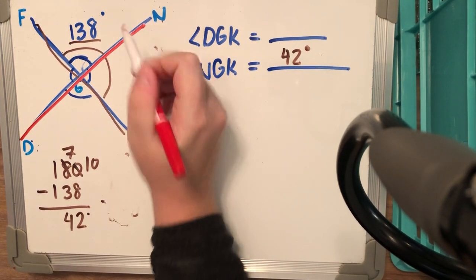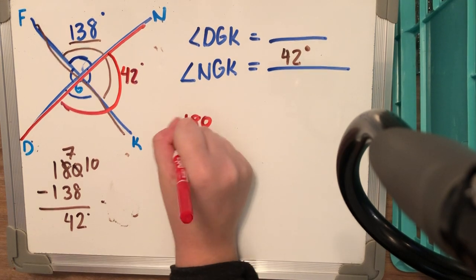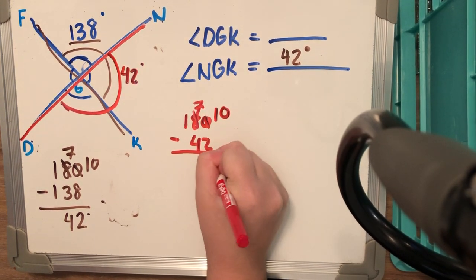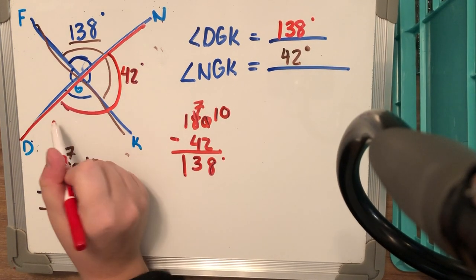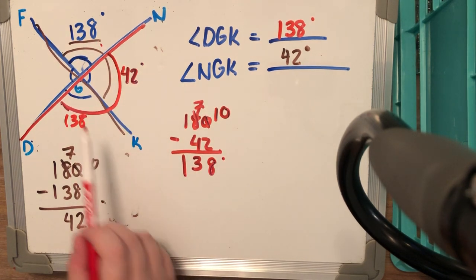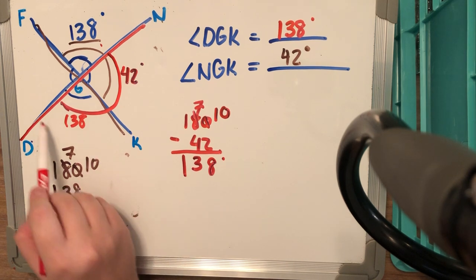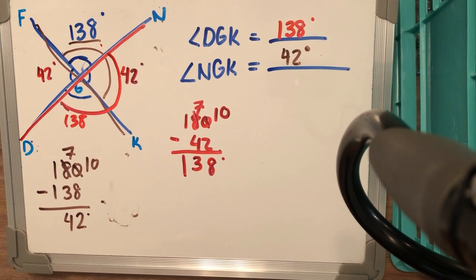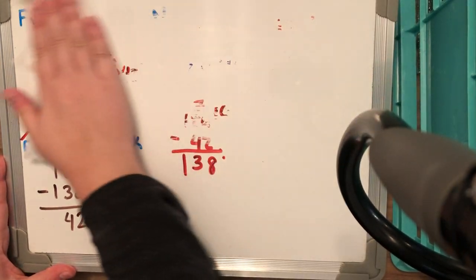Now that I have 42 degrees, I can figure out angle DGK. This is a straight line, so I do 180 degrees minus 42 degrees, and that gives us angle DGK which is worth 138 degrees — the exact opposite of the angle over here. And if I want angle FGD, I take 138 and subtract from 180 to get 42 degrees. That's one problem: given an angle measure, use 180 degrees to find unknown angle measures.